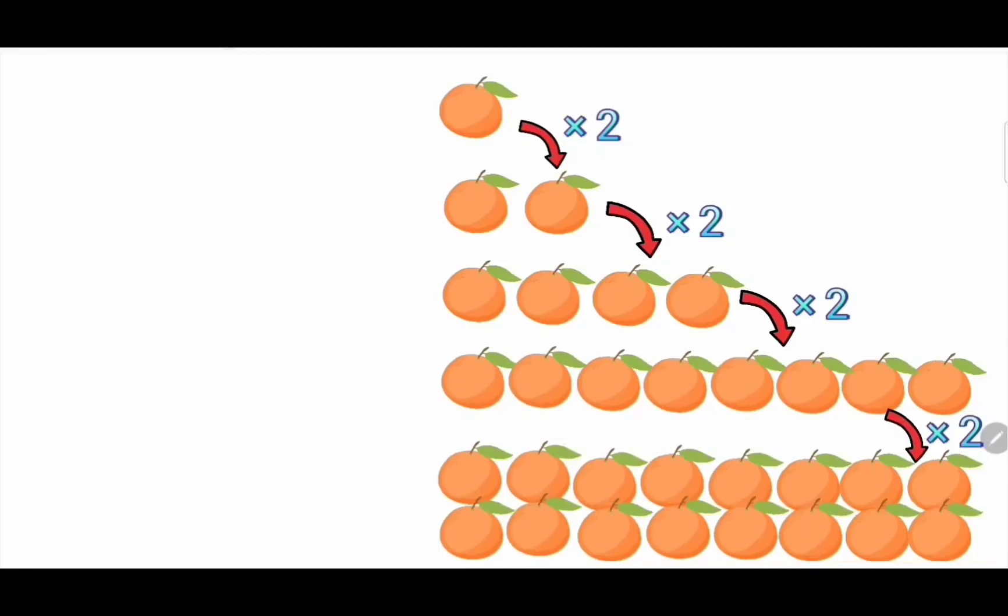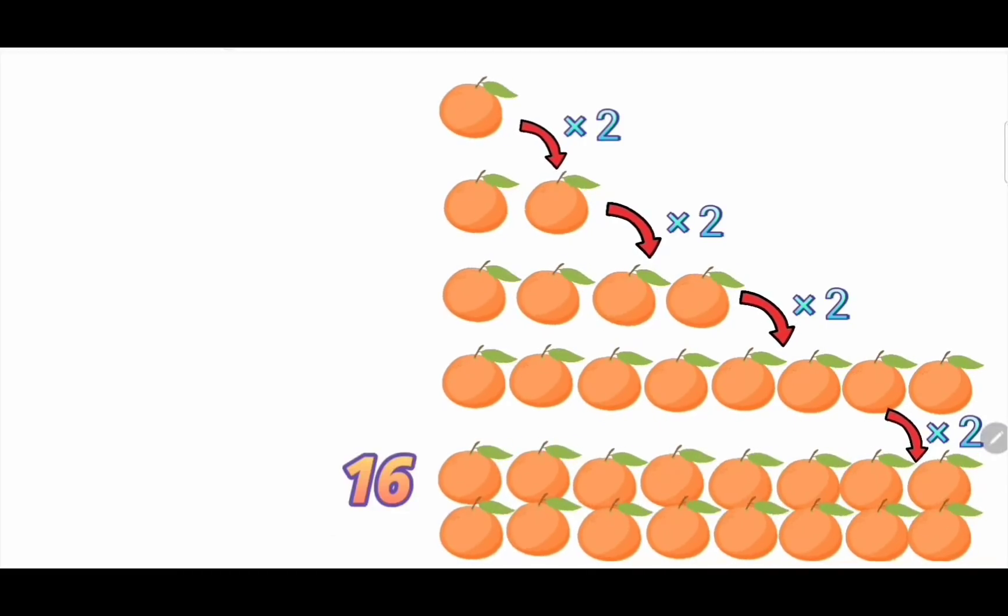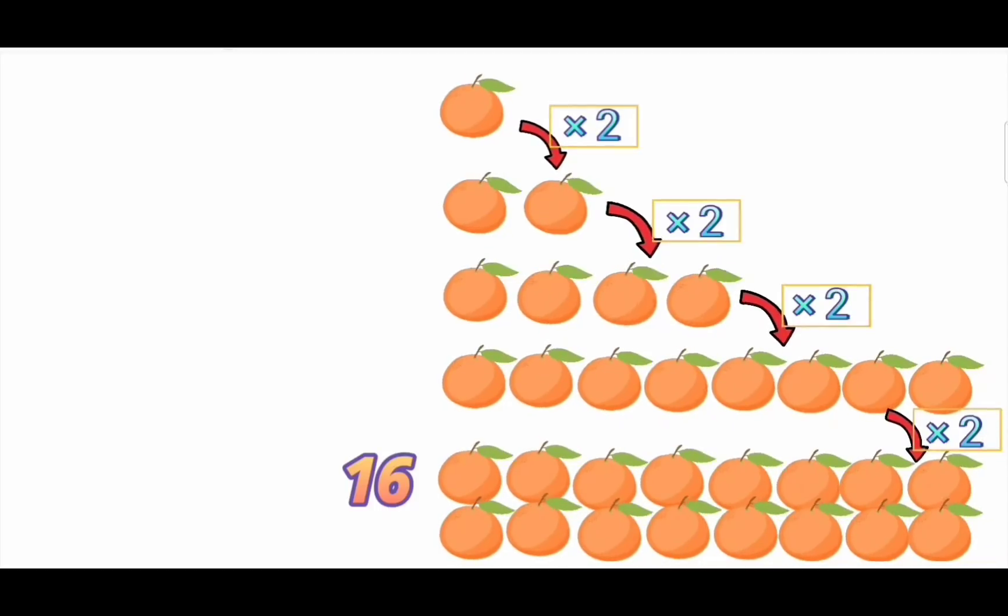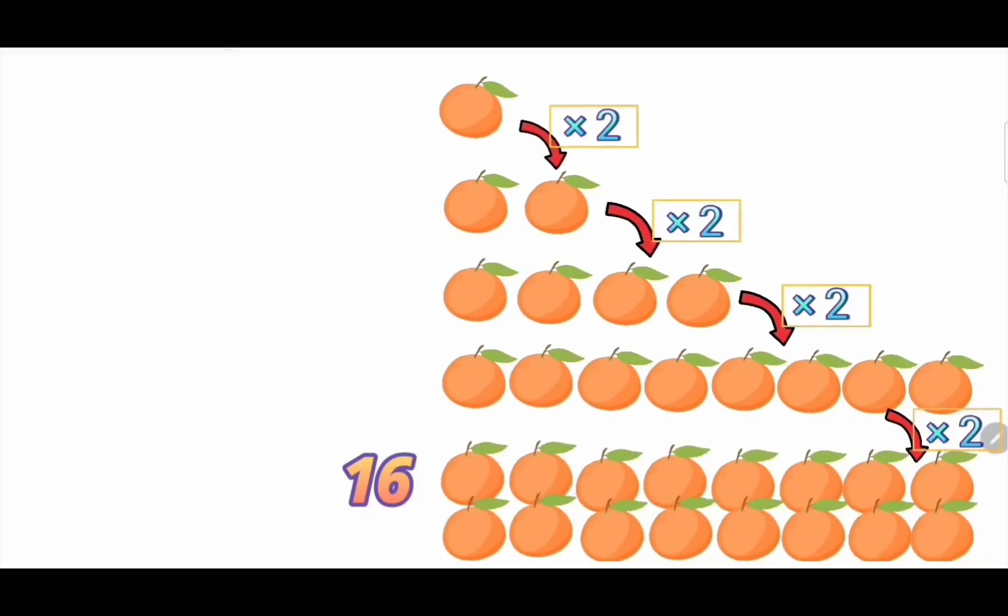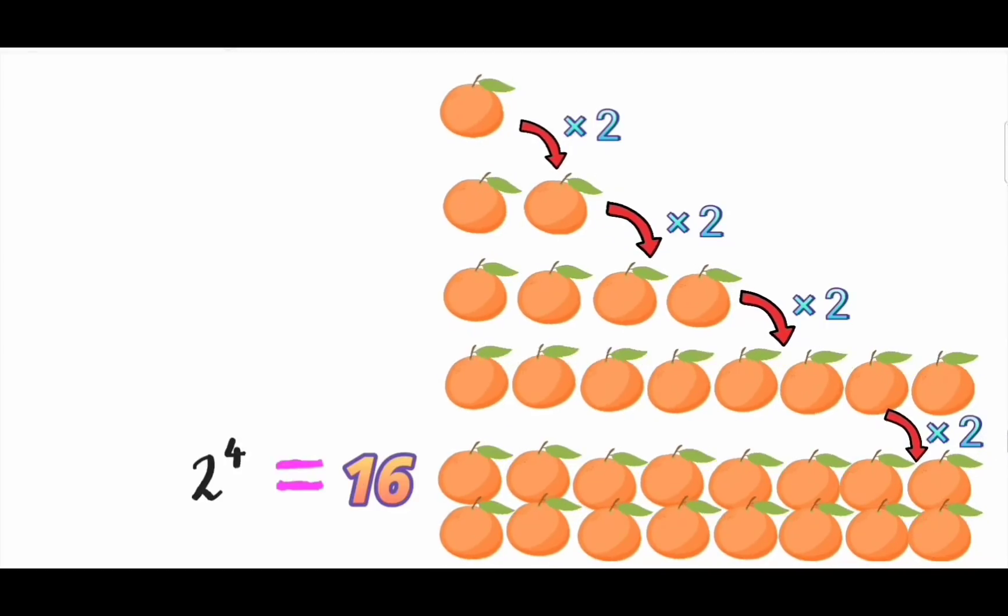Let's try to write this scenario mathematically. Ok, here you have 16 oranges. You got this 16 oranges by doubling an orange 4 times successively. You can write this in exponential form 2 power 4.